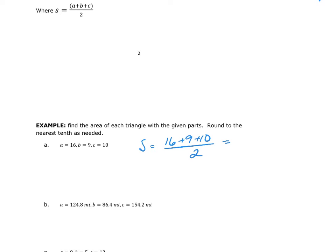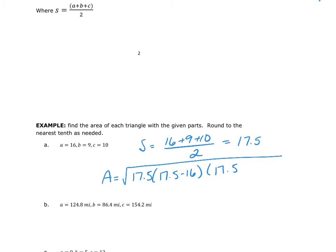My s is going to be equal to 16 plus 9 plus 10, all divided by 2, and I get 17.5. The area is equal to the square root of 17.5 times (17.5 minus 16) times (17.5 minus 9) times (17.5 minus 10). Putting that in my calculator, I end up with the area being 40.91 square units.